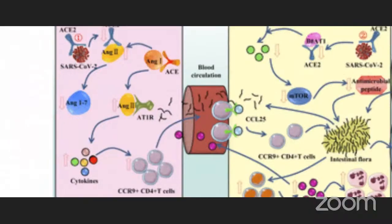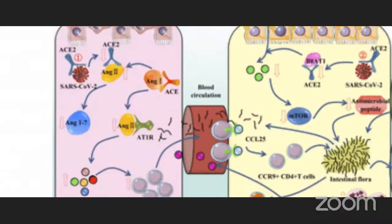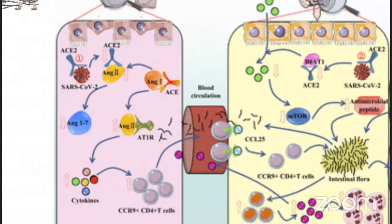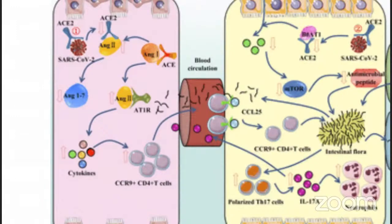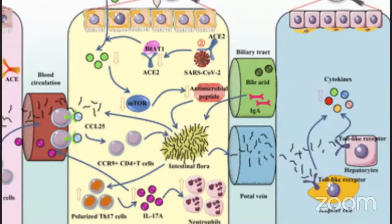SARS-CoV-2 binds with ACE2 receptor to enter the lung, resulting in accumulation of angiotensin II and decrease of angiotensin 1-7. Angiotensin II combined with angiotensin 1 receptor promotes cytokine release and increases chemokine receptor 9 (CCR9) and CD4+ T lymphocyte cells. CCL25 promotes the decrement of CCR9 cells into the small intestine, leading to intestinal immune damage and destroying the homeostasis of intestinal flora. The changed flora then promotes polarization of Th17 cells, and finally interleukin-17A causes the recruitment of neutrophils; cytokines and bacteria also enter the lung through the bloodstream, further affecting lung inflammation.